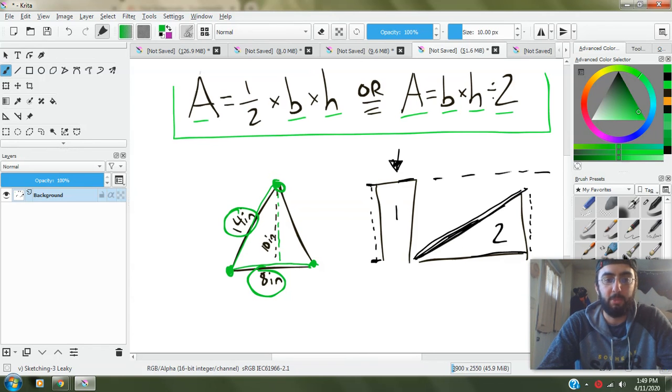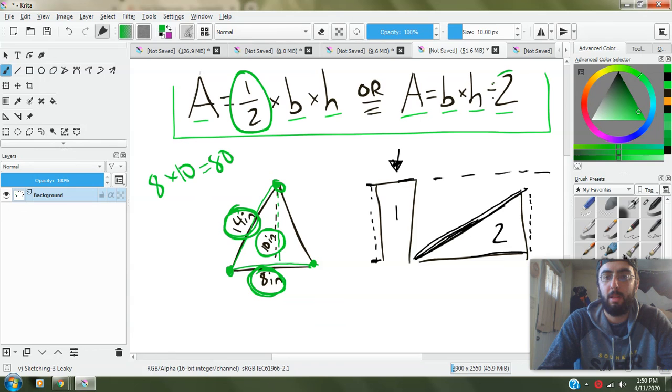So for this one, we don't need this number. And a lot of times you'll be given a lot of numbers. You only need two of them. You need the base, which is eight. And you need the height, which is 10. Multiply those together, get 80. And remember, we need to cut it in half, divide by two, multiply by one half, however you want to think about it. And we would get 40 inches squared.